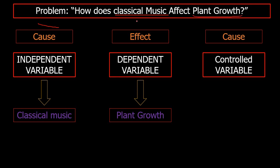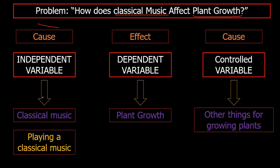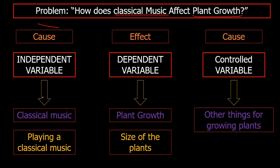The dependent variable — the one that you intend to measure — is the plant growth: what is the effect of classical music on plant growth? We want to measure the result when there is classical music versus when there is no classical music. So classical music is your independent or manipulated variable. More specifically, your independent variable is playing classical music. Your dependent variable is the size of the plants. And the controlled variables are the type of soil, amount of water, the time for sunlight, and other factors for growing plants. This is the relationship between the three variables.